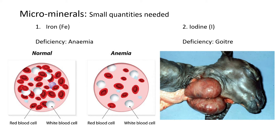Today's lesson is about the micro minerals — all the minerals that animals need in small quantities in their bodies. The first one is iron; please take note of all the symbols of these minerals. Fe is the symbol for iron. The main deficiency that iron causes is anemia, so if there's not enough iron in the person or the animal's blood, that can cause anemia.